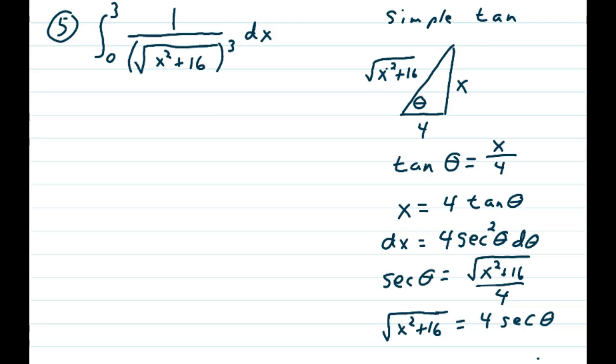So tan θ = x/4. Multiplying both sides by 4, I get x = 4 tan θ. I want to find the derivative dx, and dx = 4 sec² θ dθ.